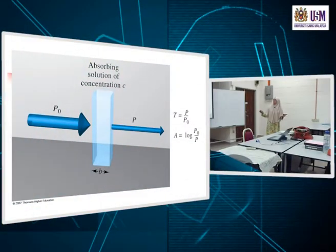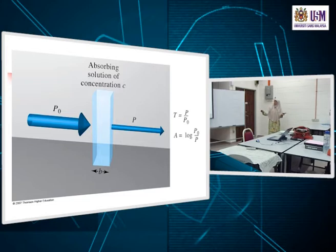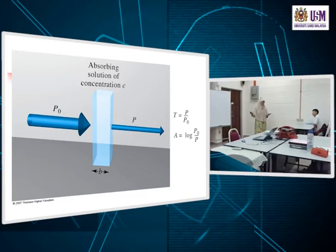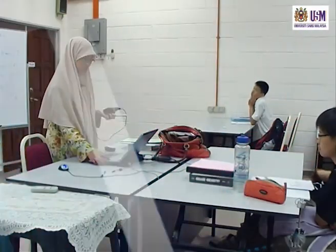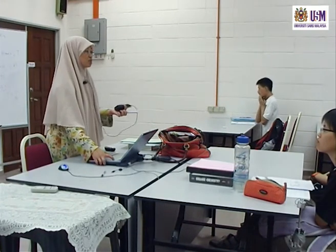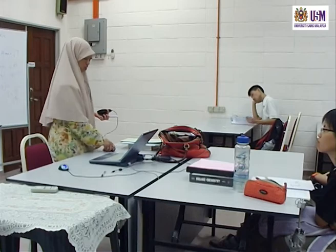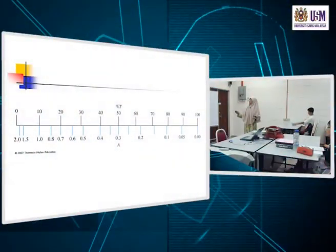Transmittance and absorbance are related through a logarithmic relationship: A = log(P₀/P), which equals log(1/T). Percent T enters mathematically: A = 2 − log(%T). This is important because older instruments have a scale where the top reads percent T from zero to 100%. When %T is 100%, absorbance is zero; when %T approaches zero, absorbance approaches infinity. The percent T scale is linear but the absorbance scale is not.